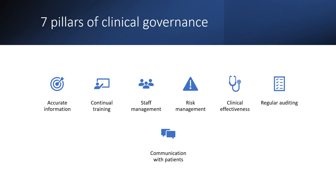So what are the seven pillars? First is accurate information. Second, continued training. Third, staff management. Fourth, risk management. Fifth, clinical effectiveness. Sixth, regular auditing. Seventh, communication with patients. These are the seven pillars of Clinical Governance. We will be discussing each pillar separately.